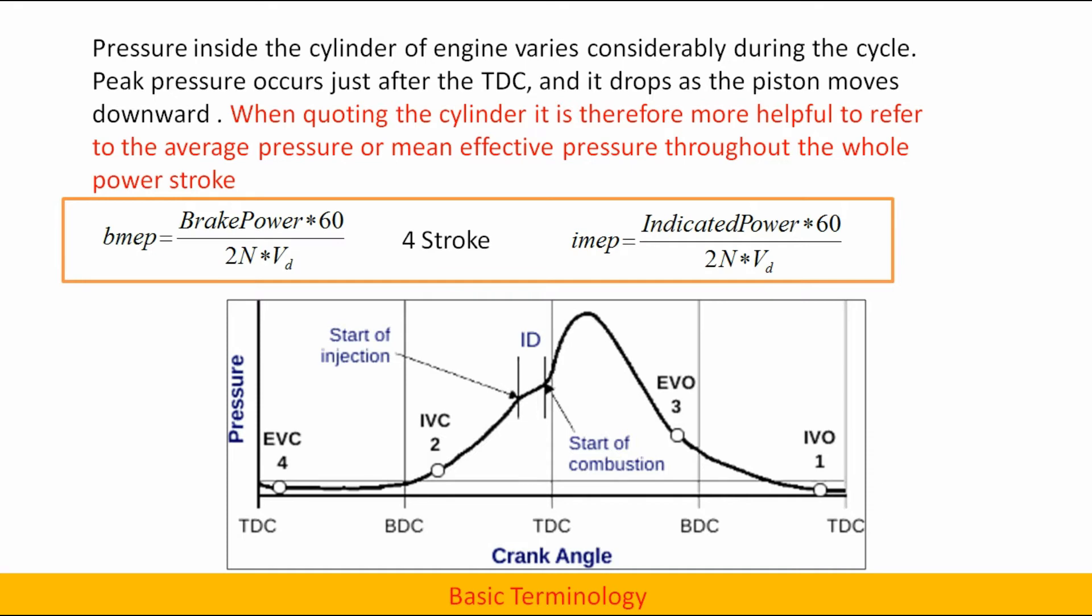Pressure inside the cylinder of engine varies considerably during the cycle. Peak pressure occurs just after the TDC and it drops as the piston moves downward. When coding the cylinder, it is therefore more helpful to refer to the average pressure or mean effective pressure through the whole power stroke. If the power is brake power then it is called brake mean effective pressure, and if it is indicated power then it is called indicated mean effective pressure.